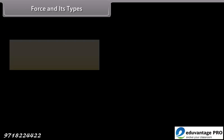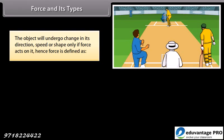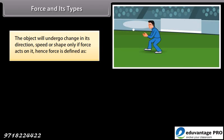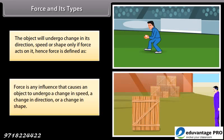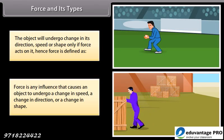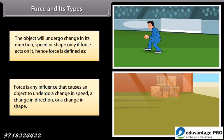Force and its types. The object will undergo change in its direction, speed or shape only if force acts on it. Hence, force is defined as any influence that causes an object to undergo a change in speed, a change in direction, or a change in shape.